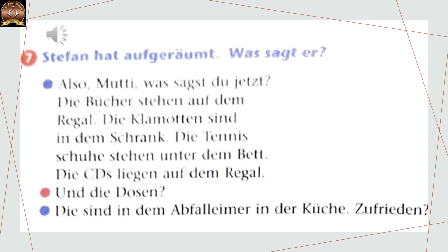Stefan hat aufgeräumt — means Stefan has cleaned his room. Now everything is in its place. So the verb will be stationary, and we are going to use dative. Was sagt er? Mutti, was sagst du jetzt? Die Bücher stehen auf dem Regal. Die Klamotten sind in dem Schrank. Die Tennis-Schuhe stehen unter dem Bett. Die CDs liegen auf dem Regal. Und die Dosen? Everywhere the verbs are stehen, sein, liegen — that is why dative will be used after the preposition.